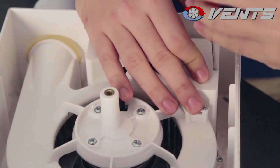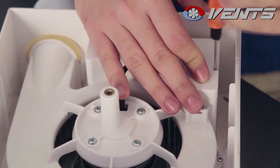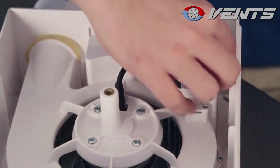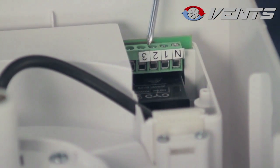After that, remove the terminal box cover. There are 4 contacts in the terminal block: the first, second, third speed, and a neutral terminal.